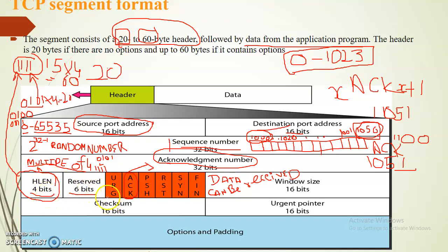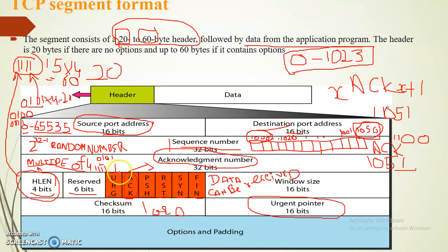After that, I am going to discuss the 6 flags of 1 bit each. All 6 flags have only 1 bit — they will be either 1 or 0. First, we will discuss URG. URG means urgent. If the URG value is 1, then the urgent pointer value will be checked; if the URG bit is 0, the urgent pointer value will not be checked. Urgent means some urgent data is being sent to the receiver, and it is immediately delivered to the application layer.